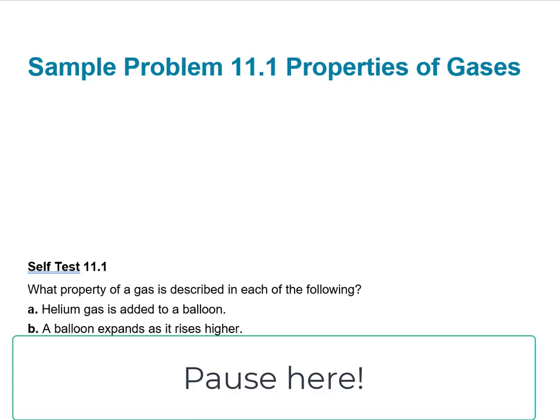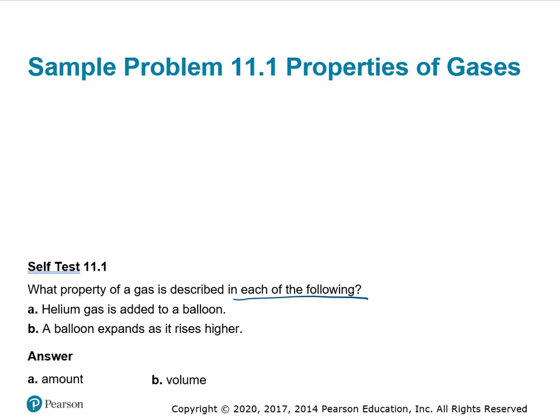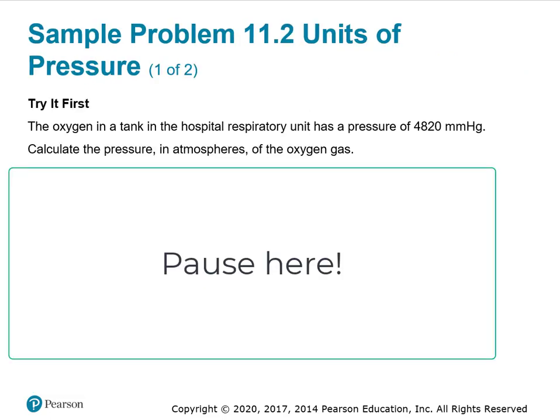We have a bunch of end-of-the-chapter sample problems, so pause the video here and figure out what property of a gas is described in each of the following. Hopefully you found that it was amount of the gas if helium gas is added to a balloon, and volume if a balloon expands as it rises higher.